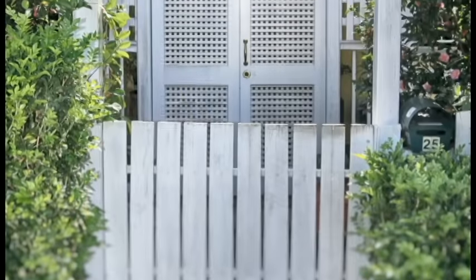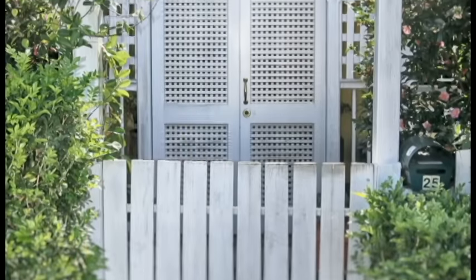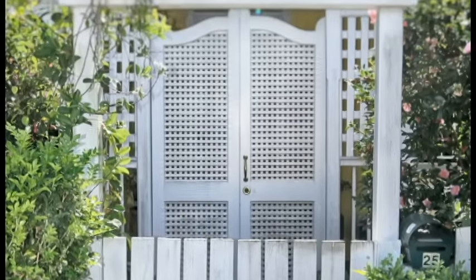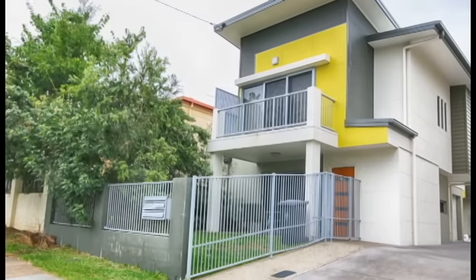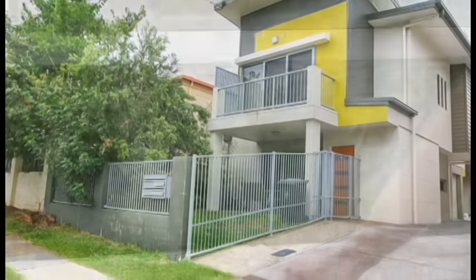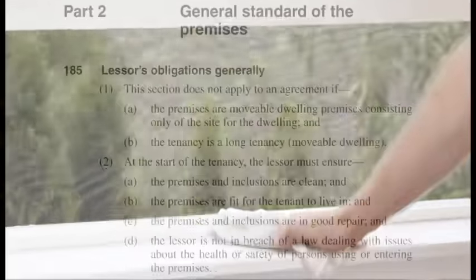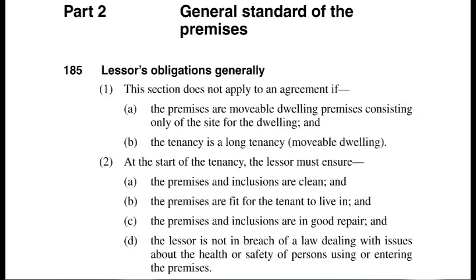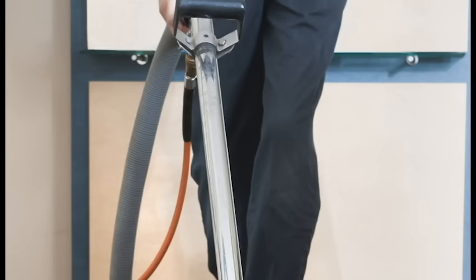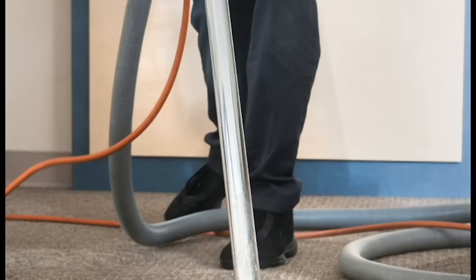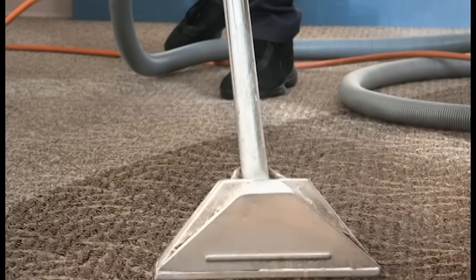The property owner or manager must ensure at the start of the Tenancy that the premises and inclusions are clean, fit for the tenant to live in, in good repair and not in breach of any health and safety laws. The tenants must keep the premises and inclusions clean during the Tenancy having regard to the condition at the start. At the end of the Tenancy, the tenant must return the premises and inclusions in the same condition they were at the start of the Tenancy, minus fair wear and tear.